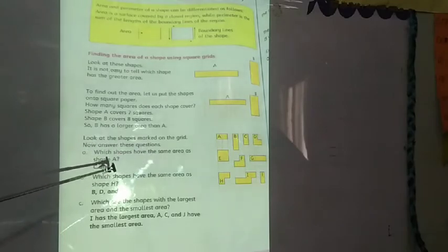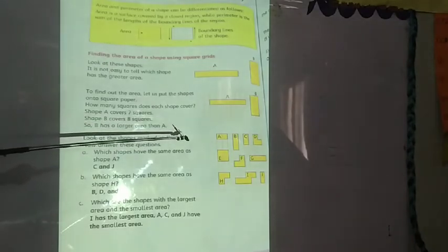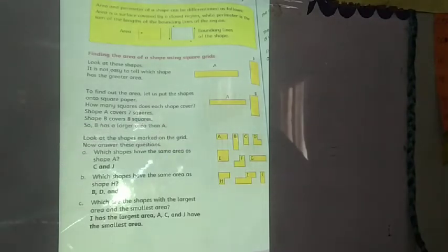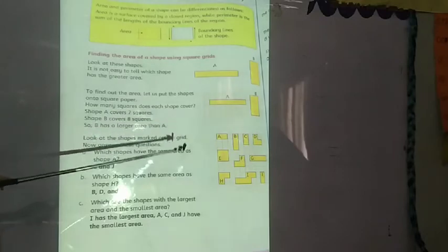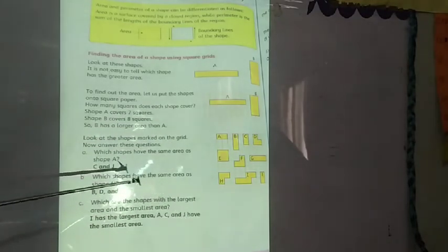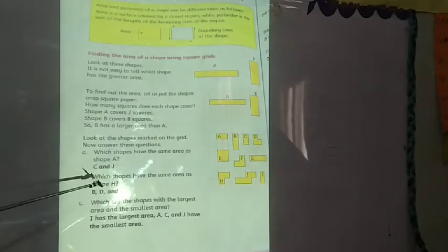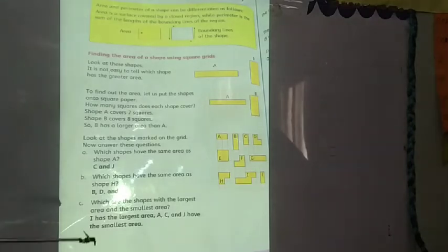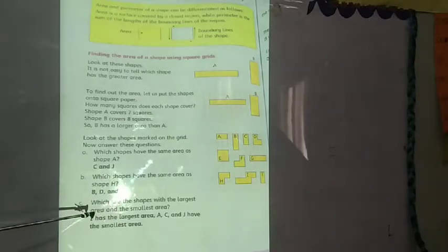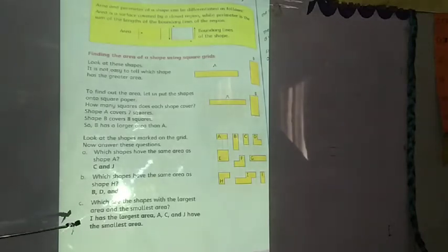Look at the shapes marked on the grid and answer these questions. Which shape has the same area as shape A? Shape A has a 2 cm square area. C and J have the same area as shape A. Which shapes have the same area as shape H? H has 3 squares — B, D, A and F have the same area. Which shapes have the largest and smallest area? I has the largest area. A, C and J have the smallest area.